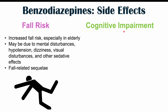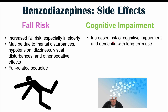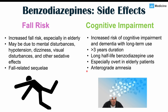Cognitive impairment is another important long-term consequence. There is evidence of increased risk of cognitive impairment and dementia with long-term benzodiazepine use, especially if taken for greater than three years and with long half-life benzodiazepines like diazepam (half-life 20-70 hours). This is especially overt in elderly patients and can include anterograde amnesia — difficulty forming new memories.